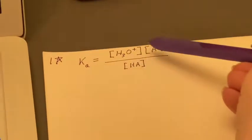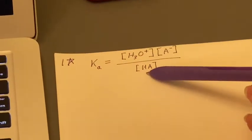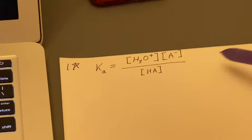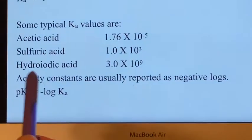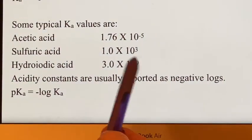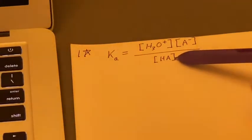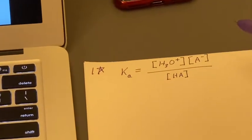So that these will be big numbers, and this will be a very small number in order for this to end up being 1,000. And hydroiodic acid is even crazier. 10 to the 9th, all of the acid is dissociating into the components.